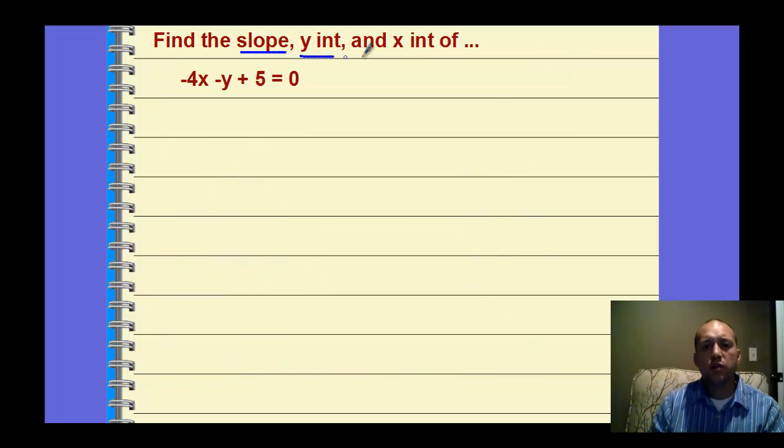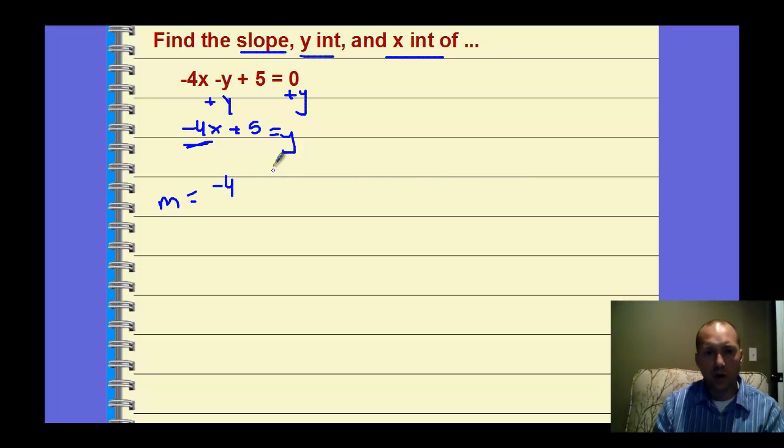Find the slope, y-intercept, and x-intercept of this equation. So this right here is in general form. We can find the slope if we isolate y. If we get y by itself, we put it in the slope-intercept form. So this one can add y to both sides, and it actually puts it in the slope-intercept form quickly. And so then there's our equation. So our slope is the number multiplying to x, so our slope is negative 4. The slope is negative 4, negative 4 over 1.